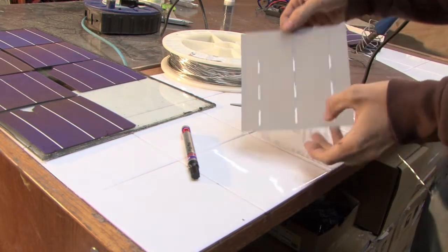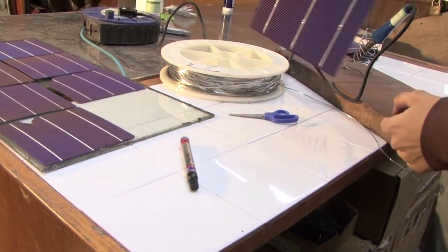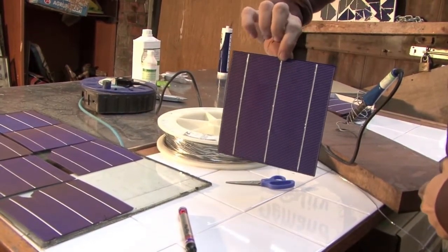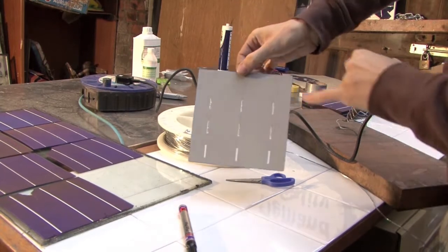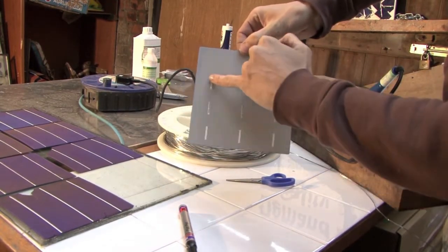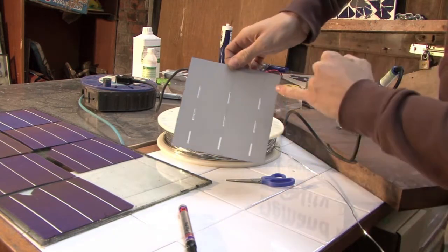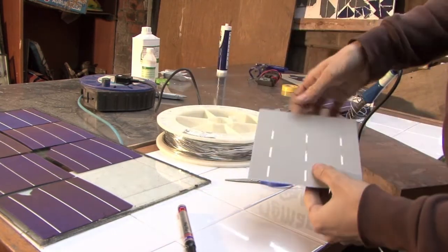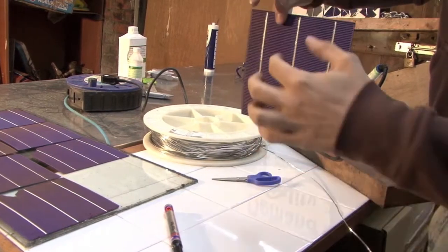Now this cell has three lines on the front and equivalently on the back, three lots of three lines that match up with the continuous lines on the front. These are basically just the same thing. This is the positive and that's the negative.